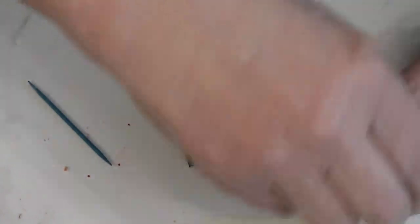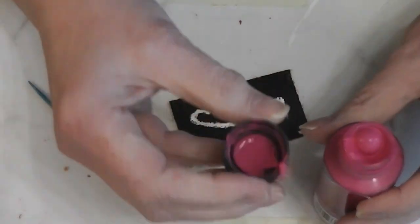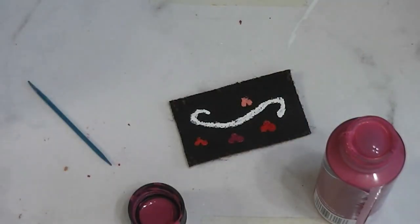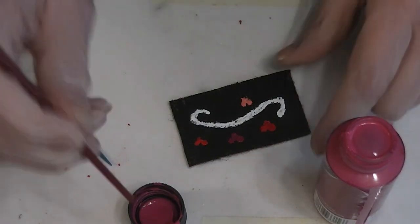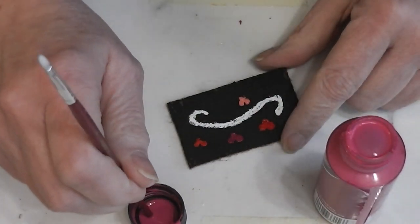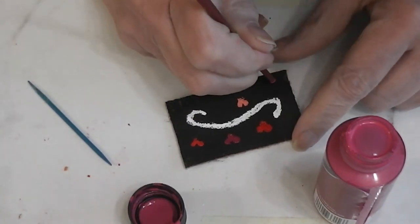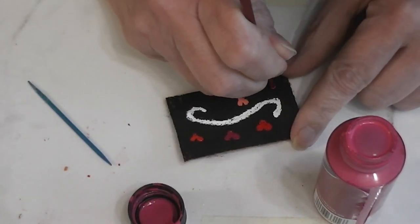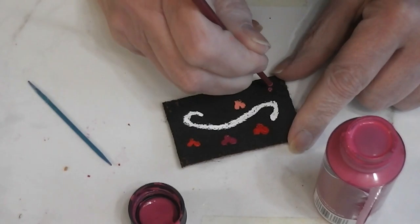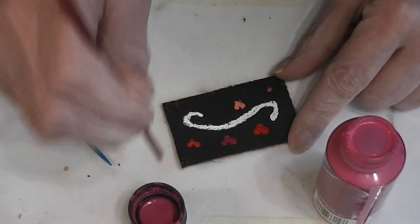And this one is the Royal Fuchsia. That's a pretty color. Let's go with a smaller one. Let's go over here. I'm going to do that again because that's better.